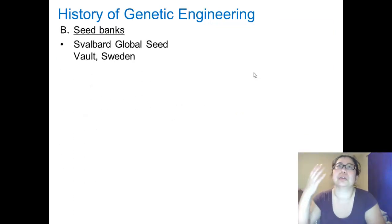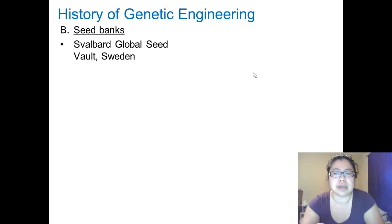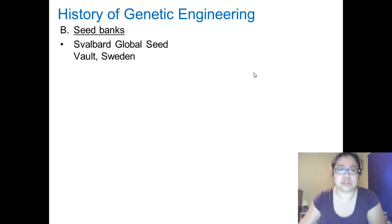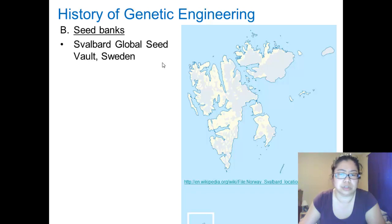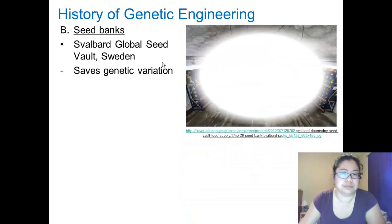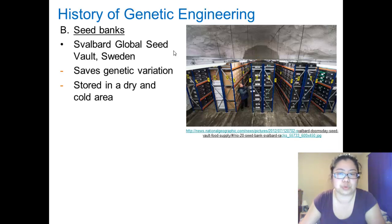With all this breeding and selective breeding, and now genetically altering plants and animals, there must be some way to save the variation that happens naturally as well. They have focused on plants, since seeds are easier to maintain and store and have a longer lifespan than an embryo. The Svalbard Global Seed Vault, which is located in Sweden, saves genetic variation. Here is an example of how they store the seeds — these large pillars, each one containing hundreds of thousands of seeds, stored in a dry and cold area that prevents germination.